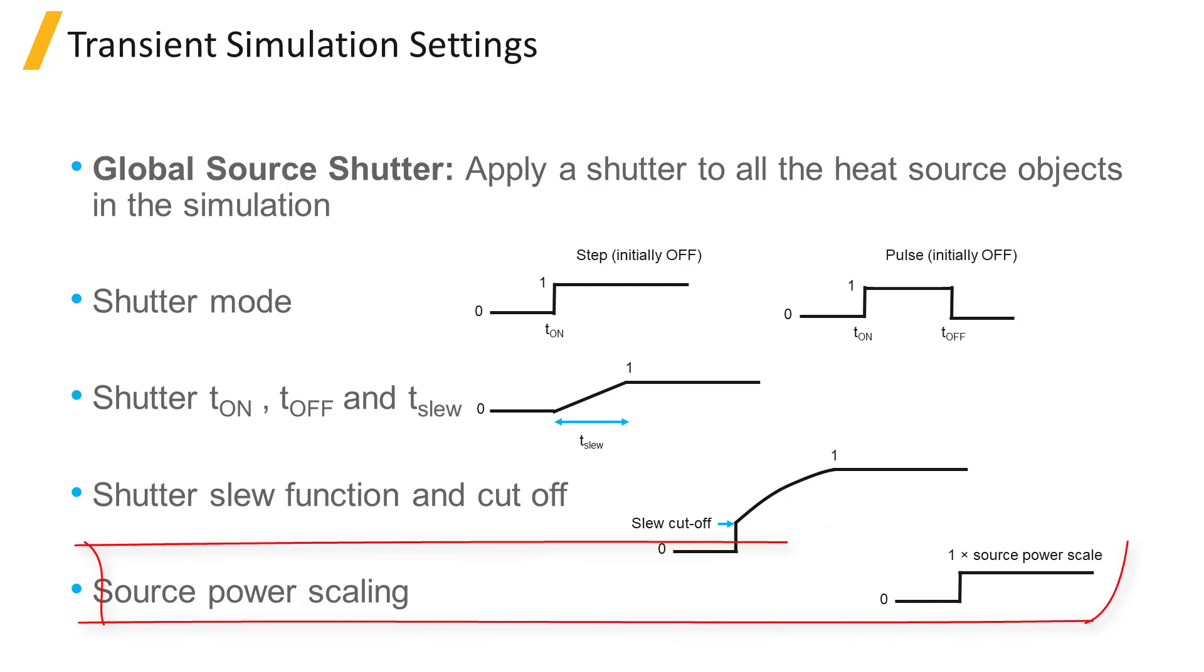Source power scaling option can be used to scale the amplitude of the source. By default, the value is set to 1, which means there is no scaling.